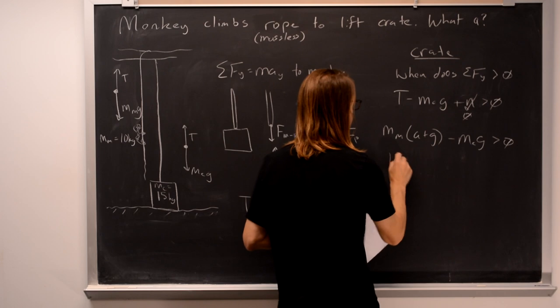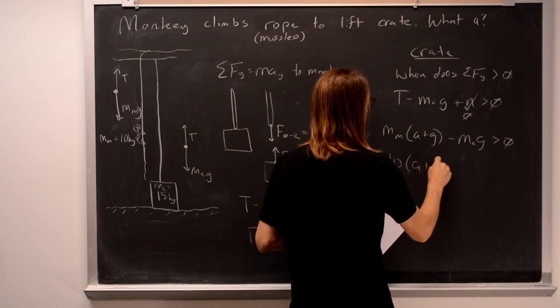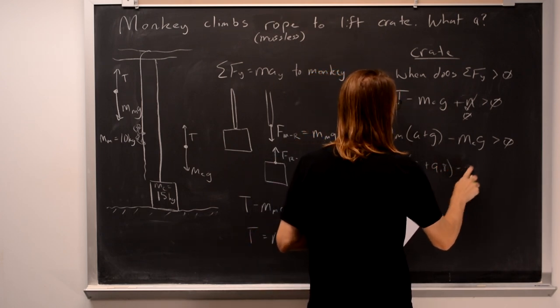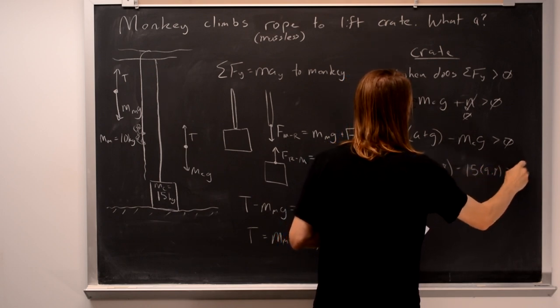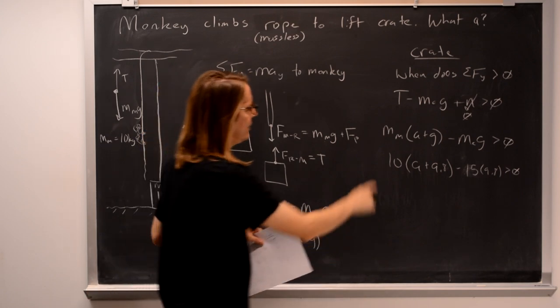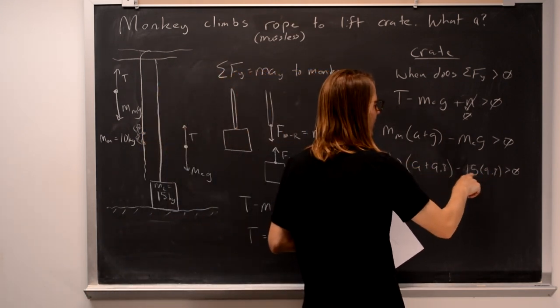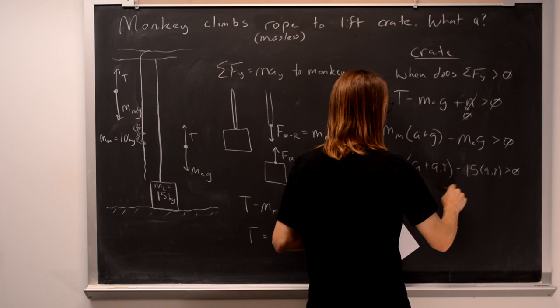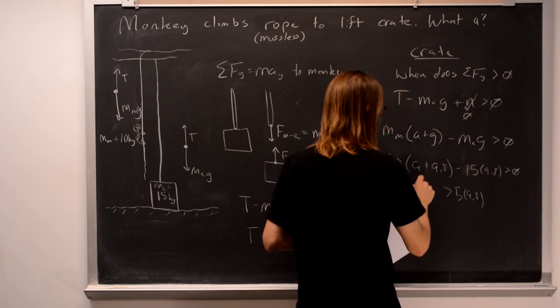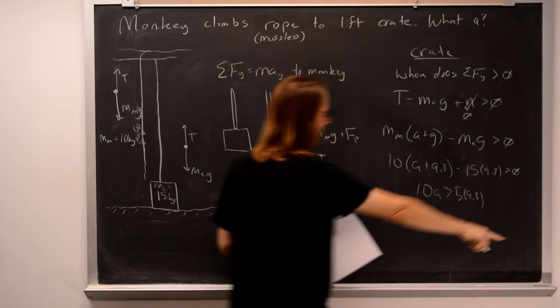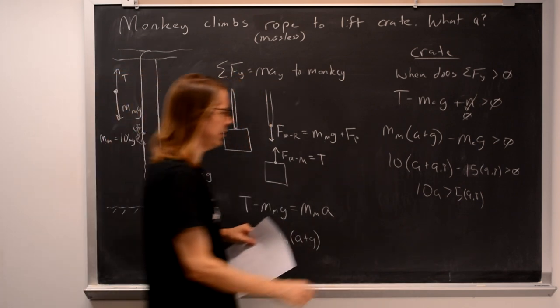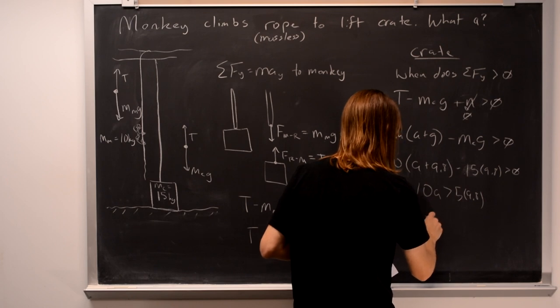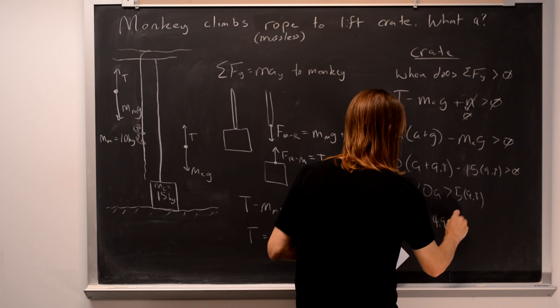So the mass of the monkey is 10. The acceleration will be A plus 9.8 minus mass of the crate is 15 times 9.8 has to be greater than zero. And you can kind of see that it's 10 times gravity minus 15 times gravity is negative 5 times gravity. Over here is 5 times gravity, 9.8, and 10 times acceleration. So it's, you know, a half of G. So the acceleration has to be greater than 4.9 meters per second squared.